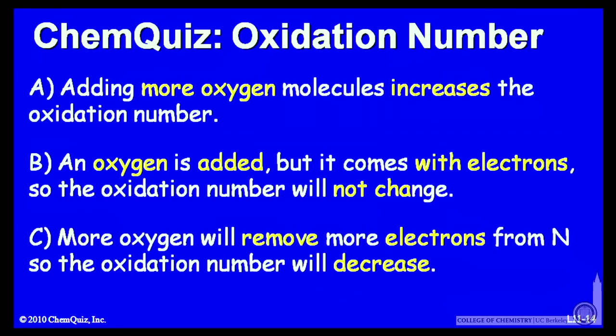Or C, more oxygen will remove more electrons from nitrogen, so the oxidation number will decrease. Think about those three possible explanations and make a selection.